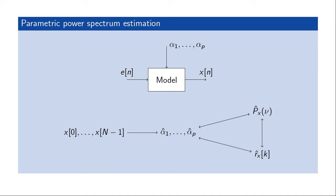What this approach relies on is a model for generating the stochastic process of interest, driven by a stochastic process that we know something about, plus some unknown parameters that we wish to estimate from the data itself. So we still assume that we have capital N samples from the data, but instead of indirectly trying to estimate the power spectrum from these samples, we instead try to fit the model to this data or to estimate the parameters based on this data.